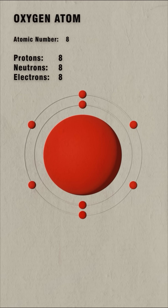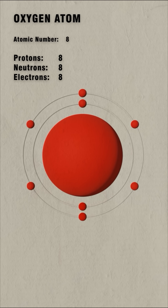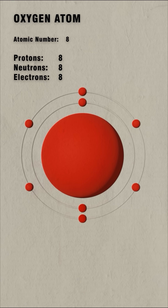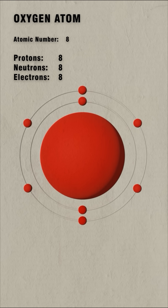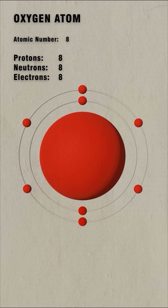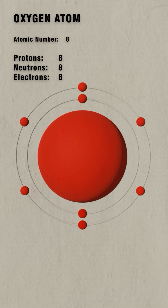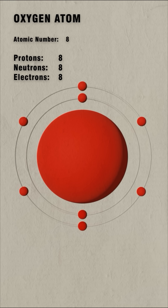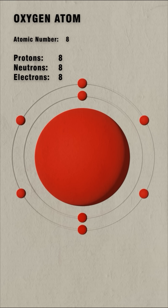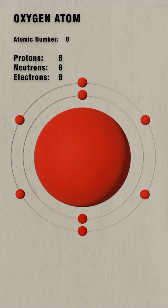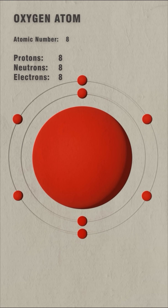Oxygen is the second most abundant element on Earth, and the third most common in the universe, after hydrogen and helium. The oxygen atom is 16 times heavier and roughly 13% larger than the hydrogen atom. It has eight electrons — two in the first shell and six in the second shell.